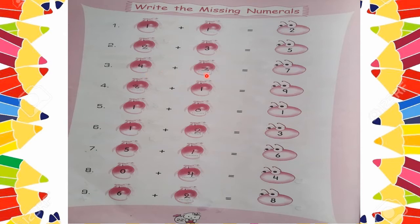Next: 4 plus space is equal to 7. What do we add to 4 to get 7? You can use your fingers — start at 4 and count up until you reach 7: 5, 6, 7. We moved forward 3 numbers. So here we write 3. 4 plus 3 is equal to 7.